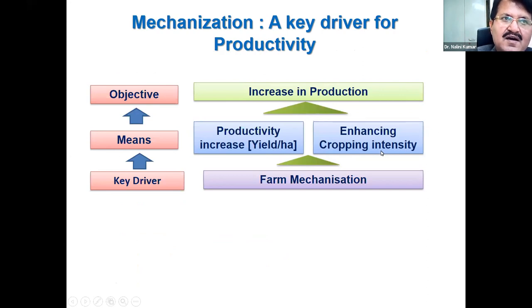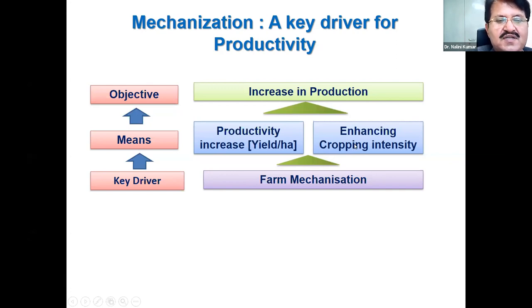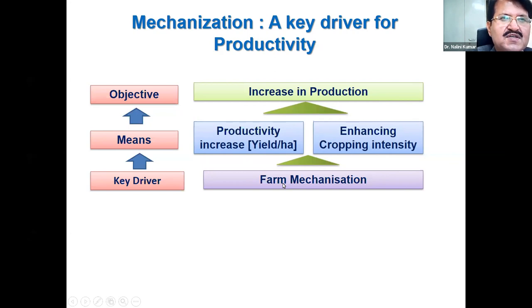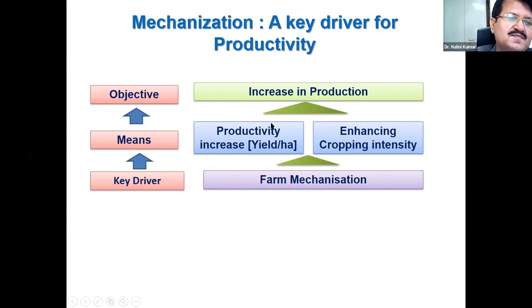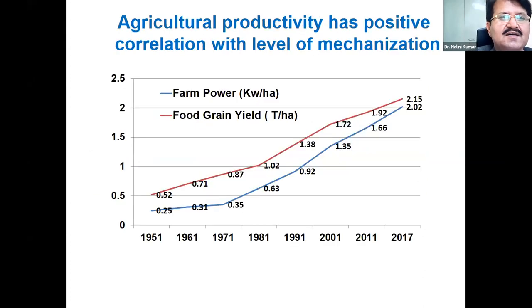We can grow more crops in a year on the same land in comparison to traditional agriculture — we can take two or three crops. Mechanization enhances cropping intensity as well as productivity due to better utilization, better placement of inputs, and early and better performance of operations. Agriculture productivity has a positive correlation with the level of mechanization.